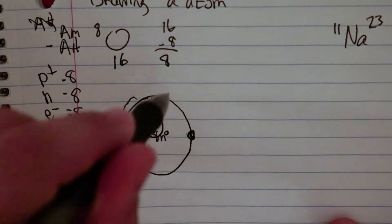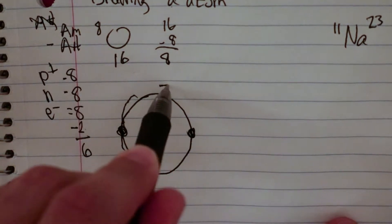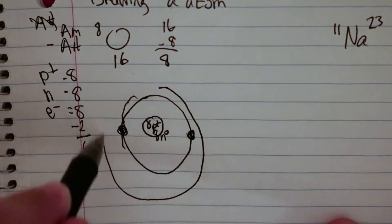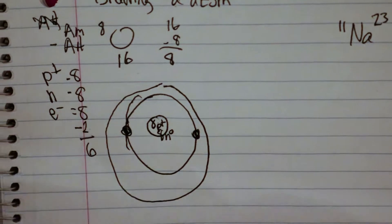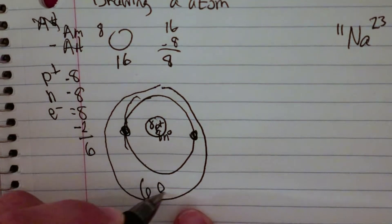So now I have to place these in the next ring. The first ring can hold 2, but the next ring can hold 8. So I'm going to draw my ring, and instead of drawing 8 dots, I'm just going to write 6 electrons.